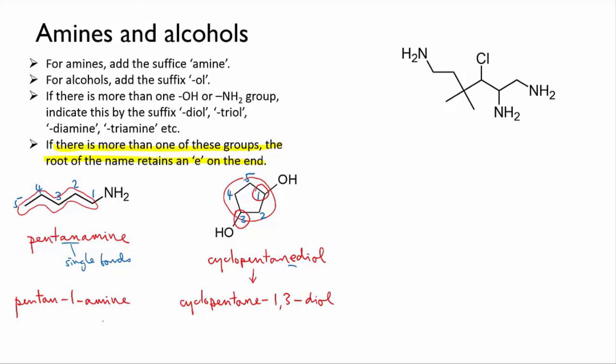Note that, like with alkenes, we insert the numbers into the middle of the name, just before the suffix, to show that the numbers refer to the two alcohol groups.